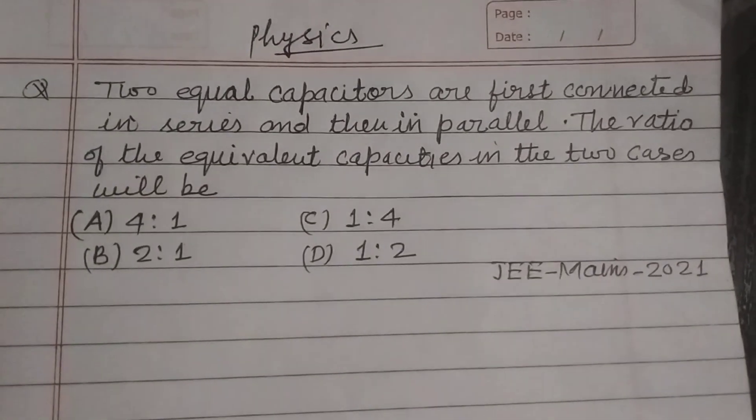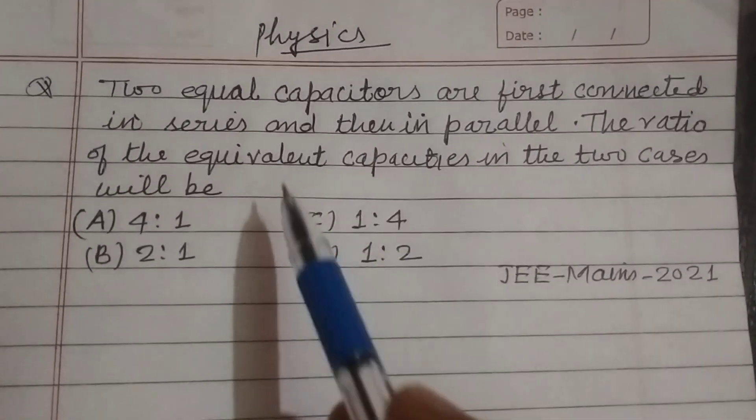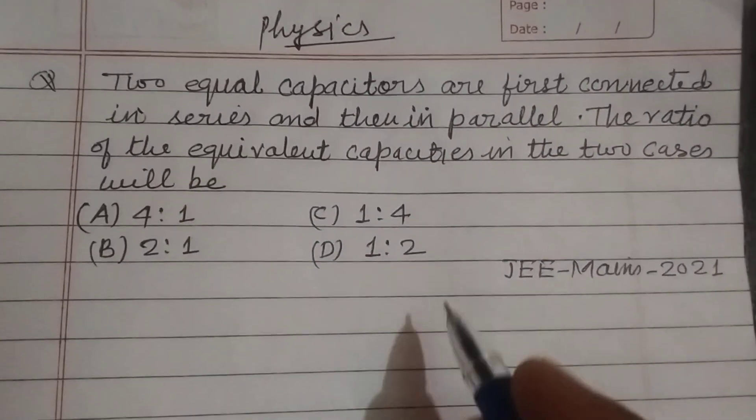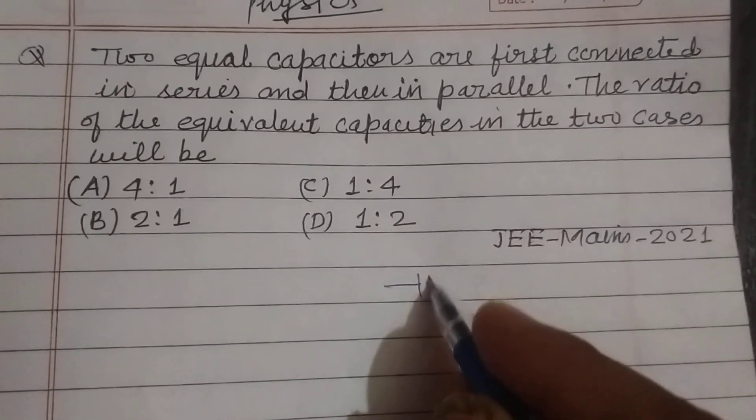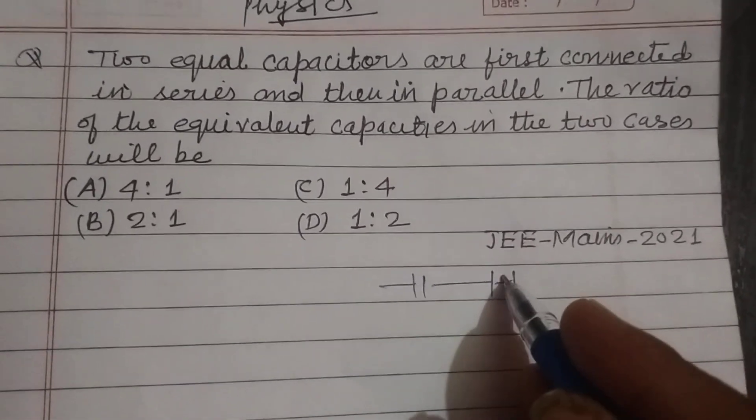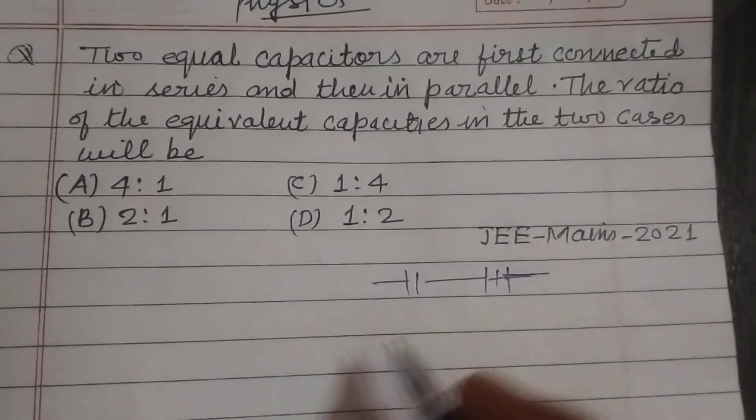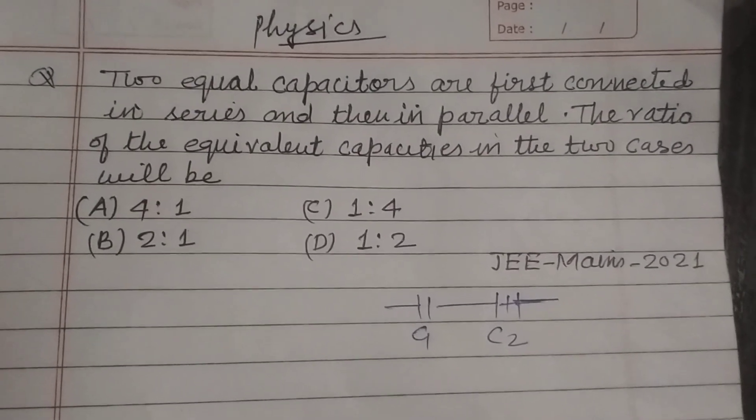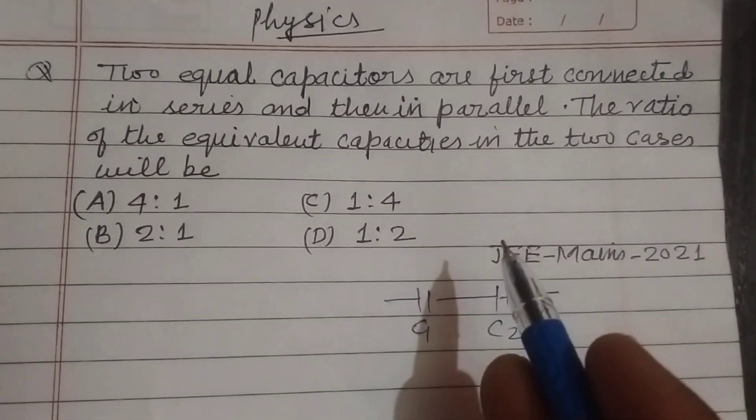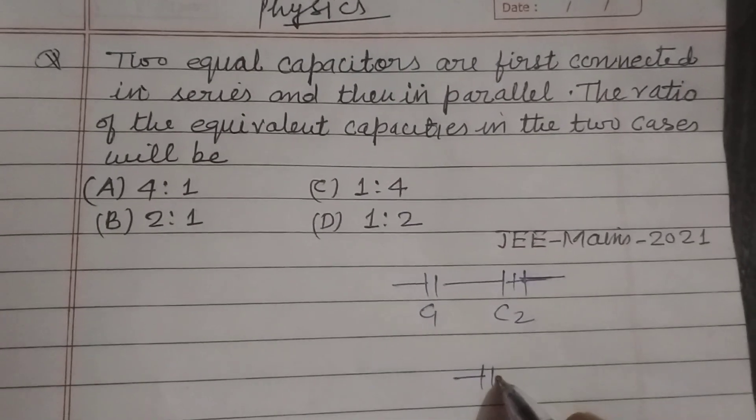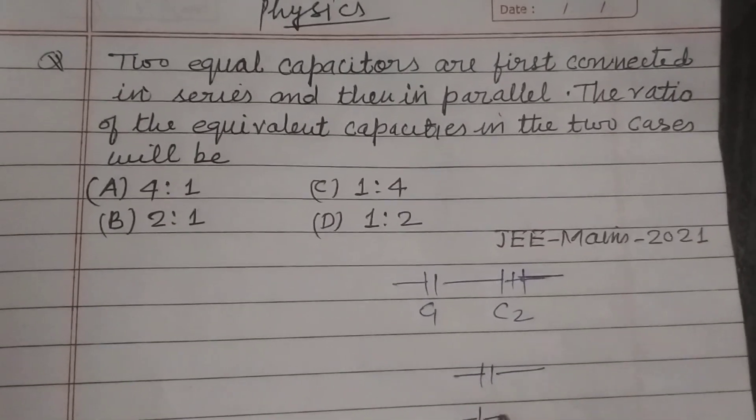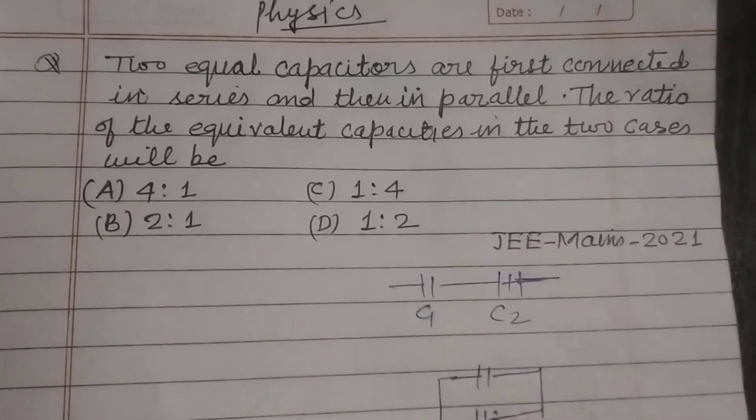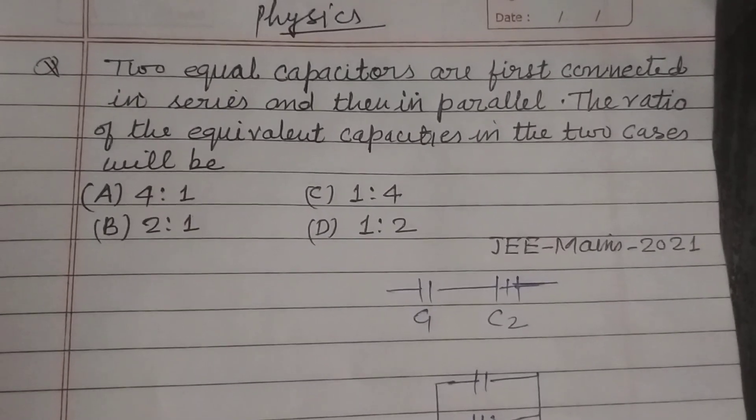Hello students, warm welcome to this YouTube channel. Two equal capacitors are first connected in series, C1 and C2, and then in parallel. The ratio of the equivalent capacities in the two cases will be...